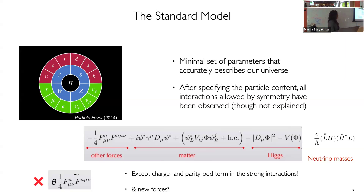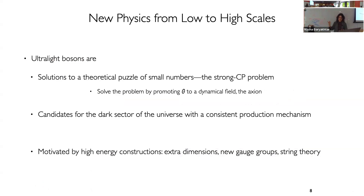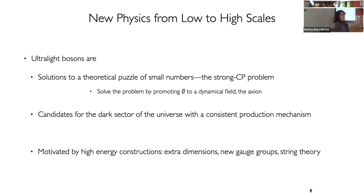There might be other things beyond this nice compact description, like new forces or new particles that are not necessarily part of the standard model. From now on, I'm going to focus on ultralight bosons motivated partially by the strong CP problem, and the axion specifically as the solution to the strong CP problem. But more broadly, they're also motivated from the experimental observation of the existence of dark matter. These ultralight bosons are excellent dark matter candidates because they're stable on cosmological timescales and they don't interact strongly.